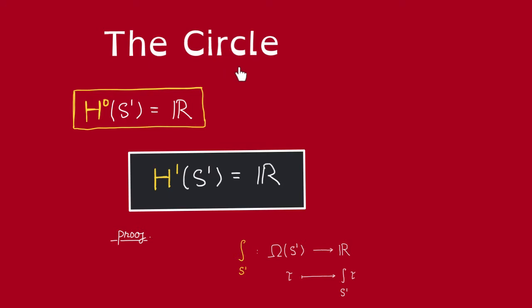First of all, the circle is connected, so its H^0 should be just R. Then, next, observe that the circle is of dimension 1, so H^2, H^3, and higher cohomology of the circle must all vanish, thus we only need to compute H^1.